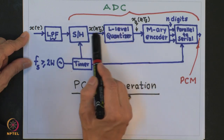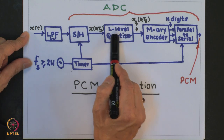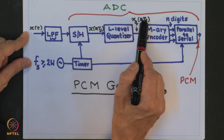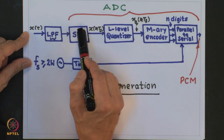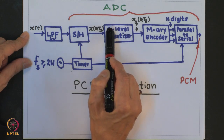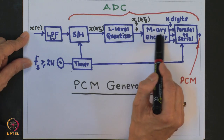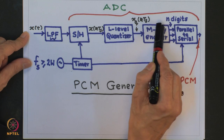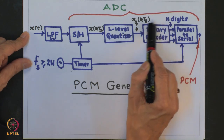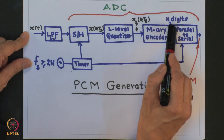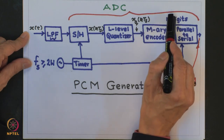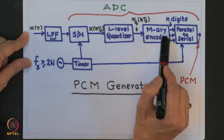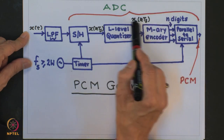An L-level quantizer rounds off the sample values to the nearest discrete value in a set of L levels. The resulting quantized samples, denoted as x_q(k·Ts), are discrete in time by virtue of sampling and discrete in amplitude by virtue of quantizing. Next we have the encoder. The encoder translates the quantized samples into digital codewords. The encoder works with M-ary digits and produces for each sample a codeword consisting of n digits in parallel.